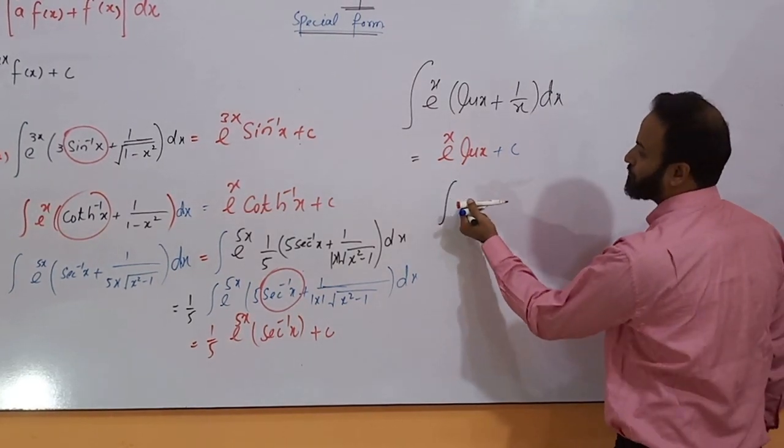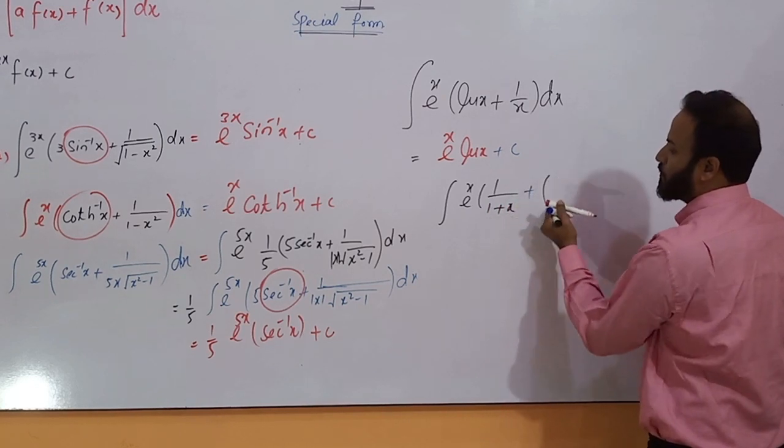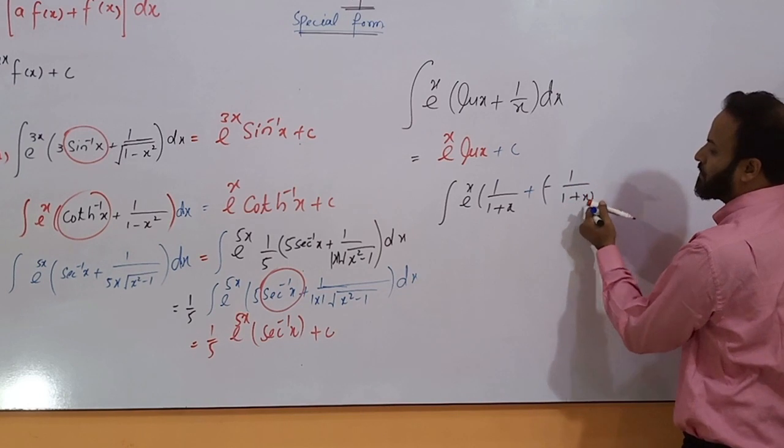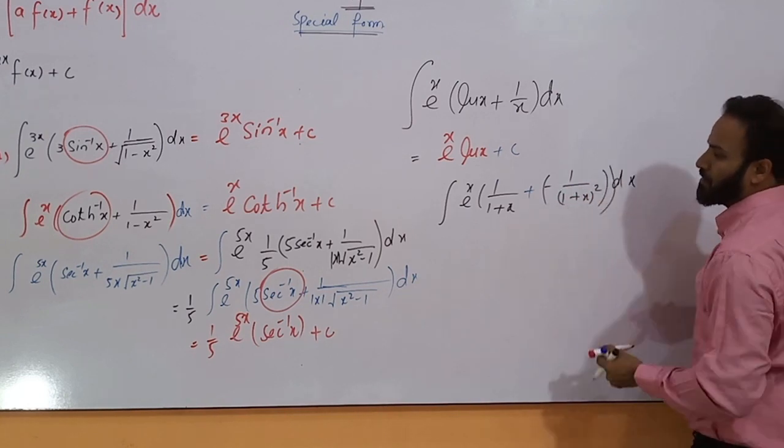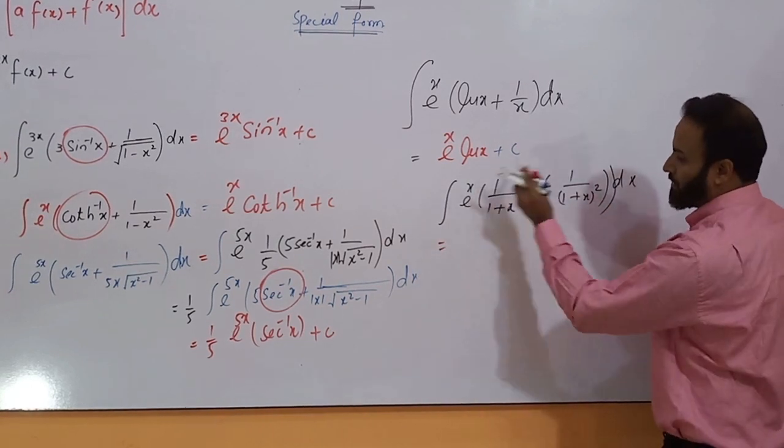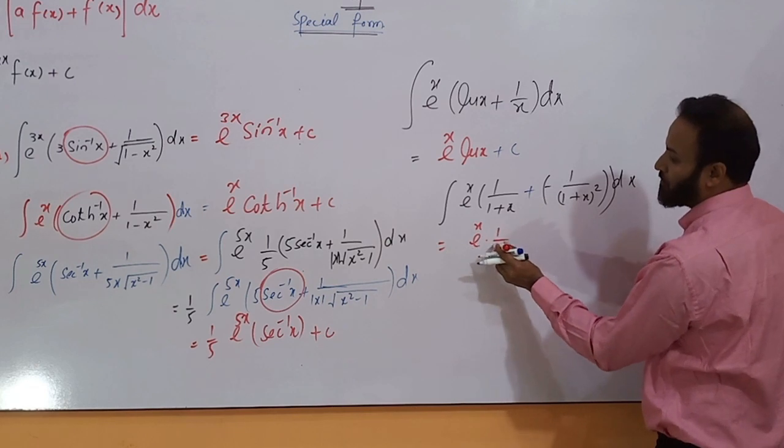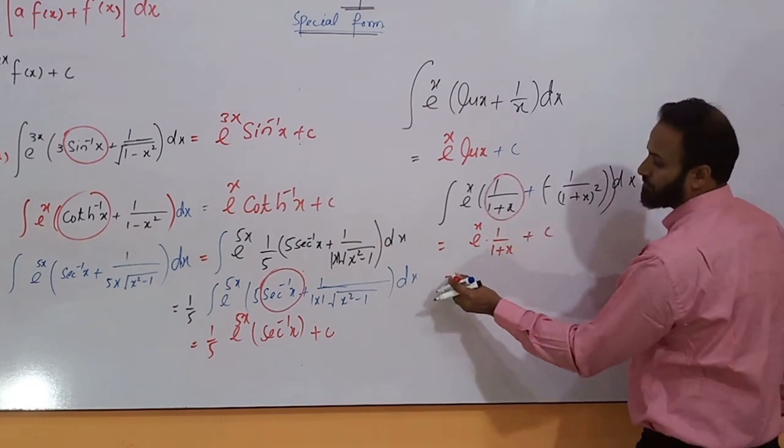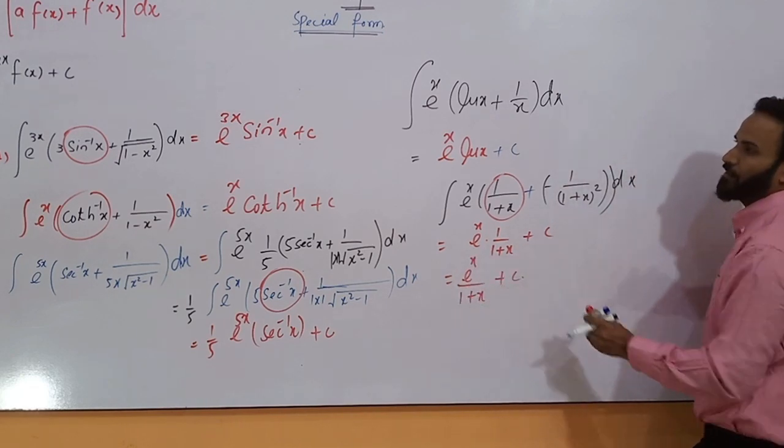Another form: e^x, 1 over 1 plus x, plus what is the derivative of this function? That is minus 1 over 1 plus x square. You can see what is the integration of this whole expression. That is e^x into 1 over 1 plus x. This is the function here. e^x over 1 plus x.